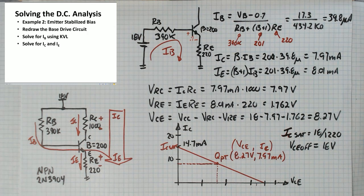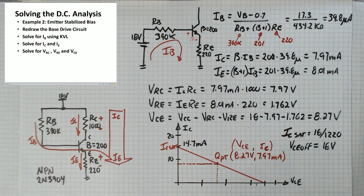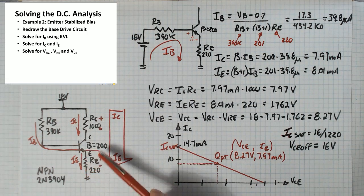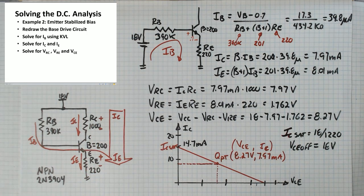Now that we've solved for the currents we can solve for the voltages across the resistor and the transistor. We know what these currents are. We know what IC is and IE is and we know what the resistor values are so we can get those voltages.